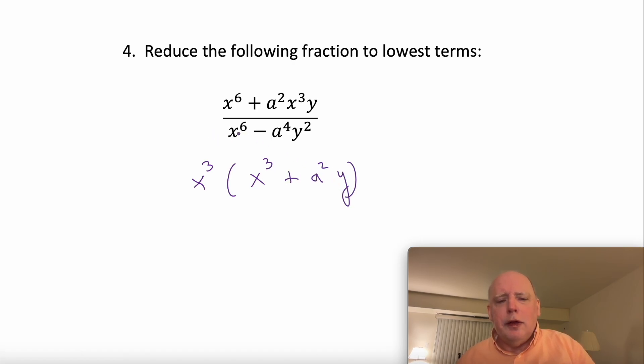In the denominator, you can see that all these powers are even, so this is actually going to be the difference of two squares. The difference of two squares looks like this: if you have a squared minus b squared, it's a plus b times a minus b.